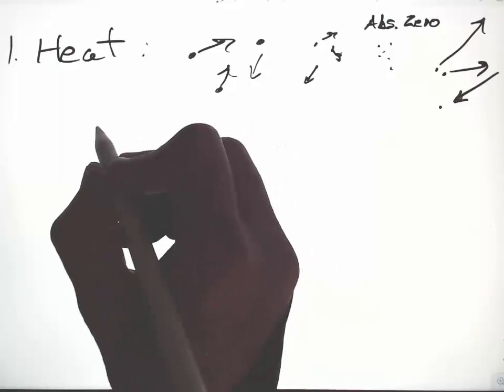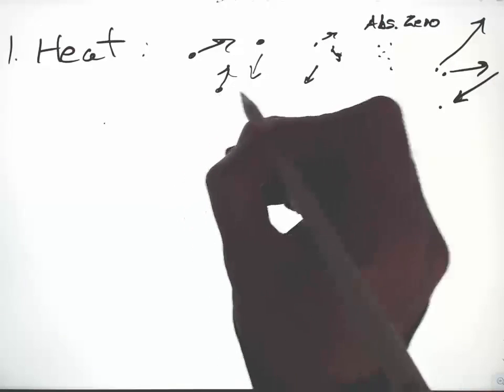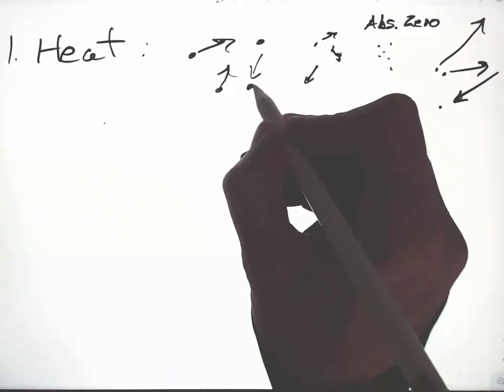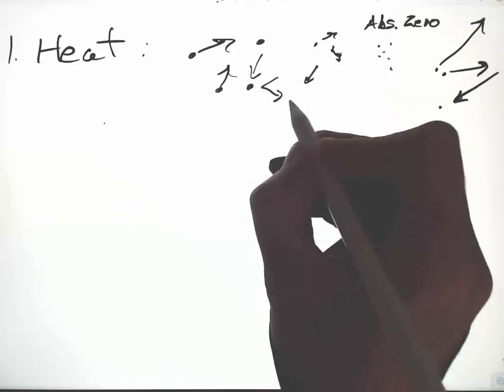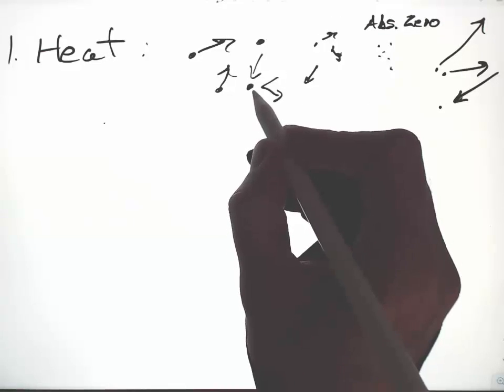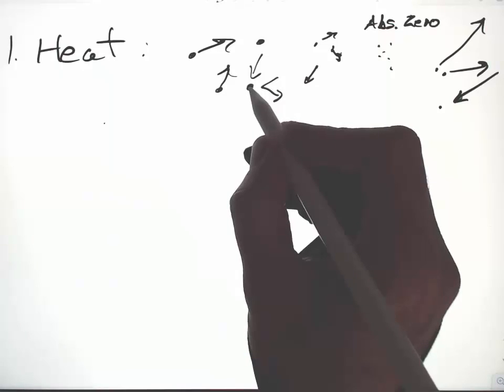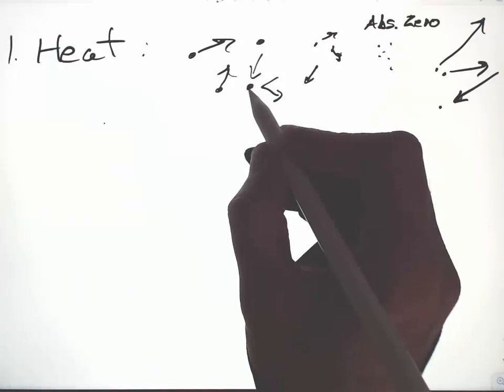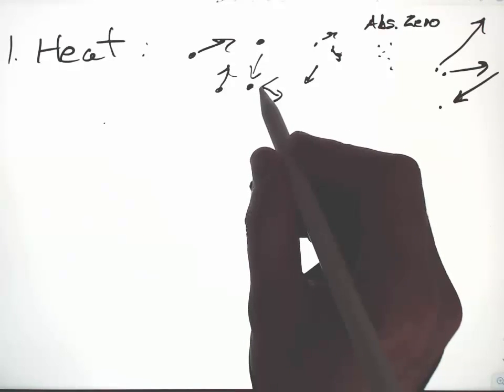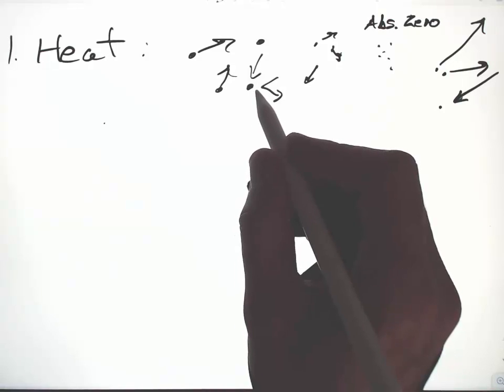So with increasing heat, molecules encounter each other more often, and when they do, they hit with more energy. Both can increase reaction rates. More frequent encounters mean more chances to have a reaction. Hitting with more energy provides more energy to break a bond.